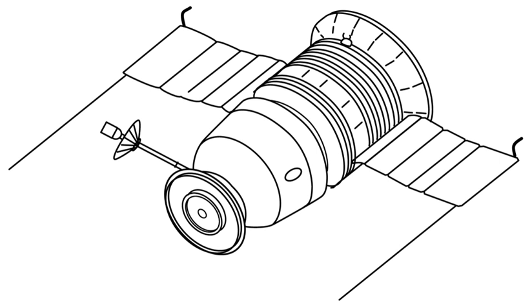The descent module came down 285 km downrange. Its landing motors fired prematurely, resulting in a harder landing than expected, and the spacecraft was subsequently dragged 550 m by its parachute.